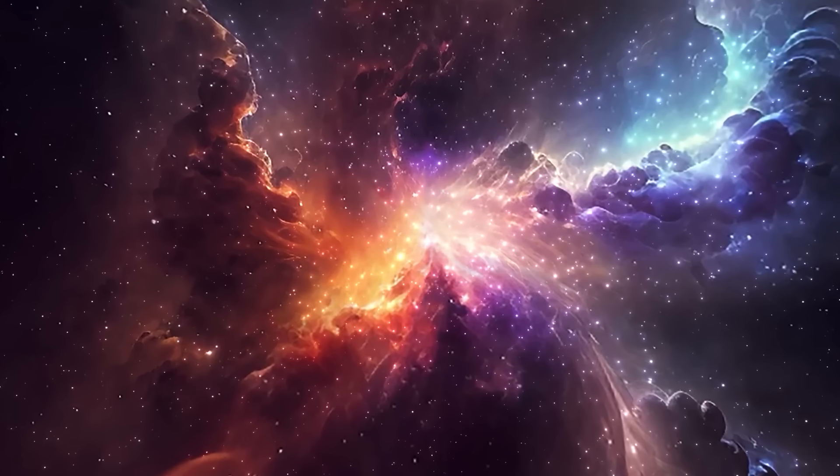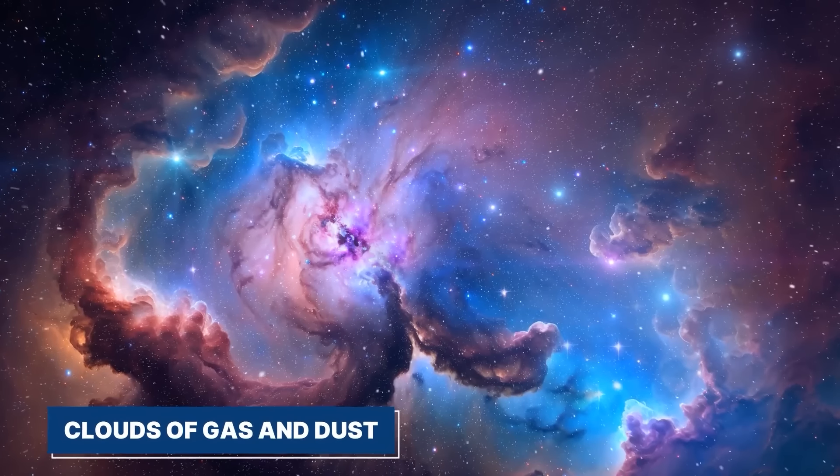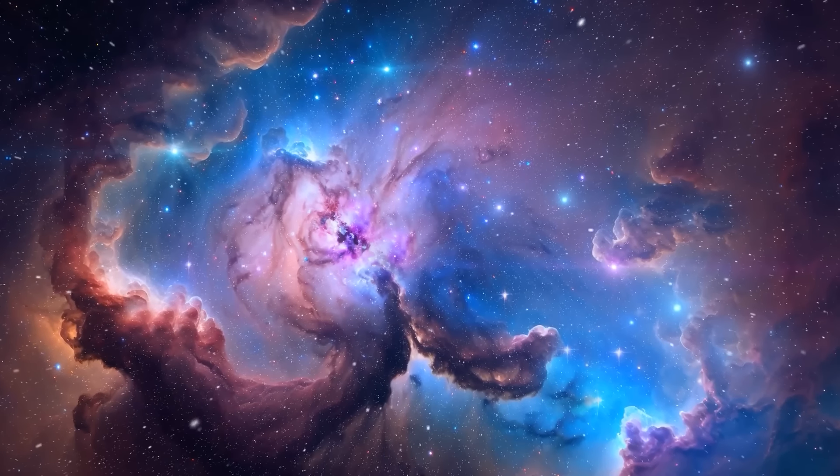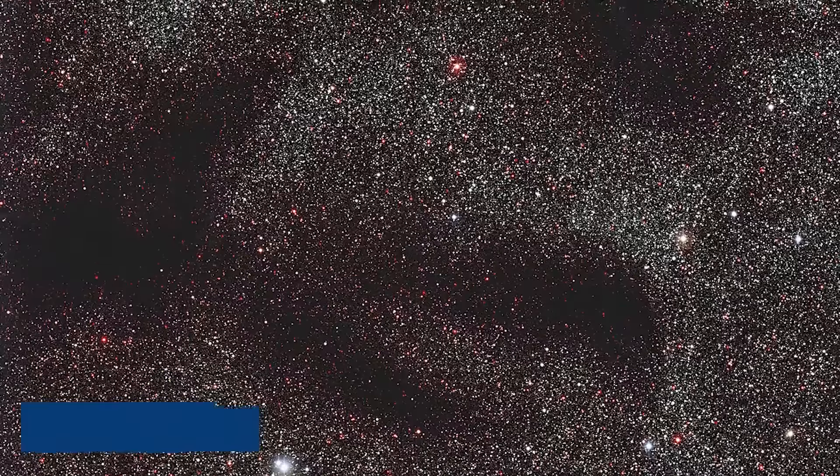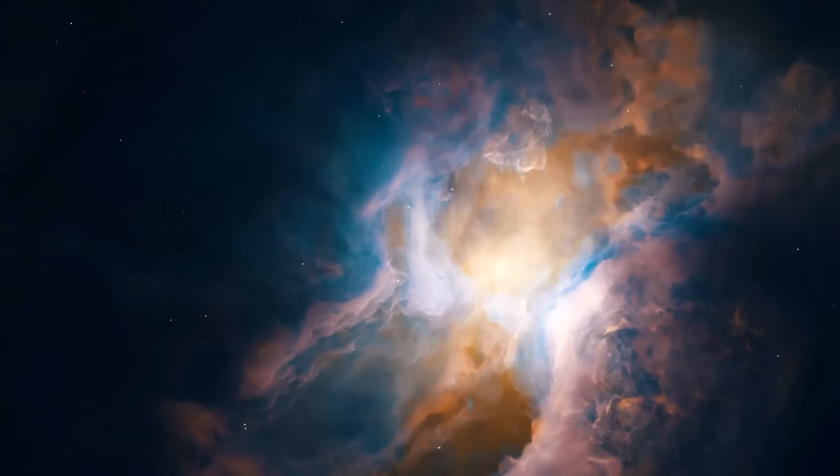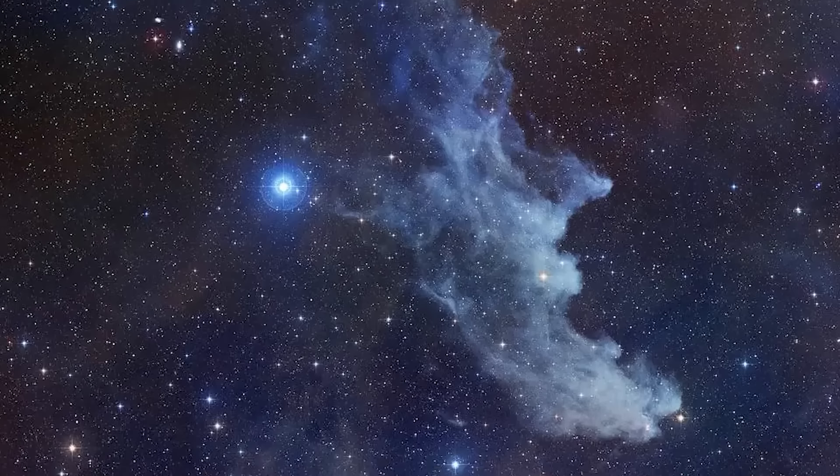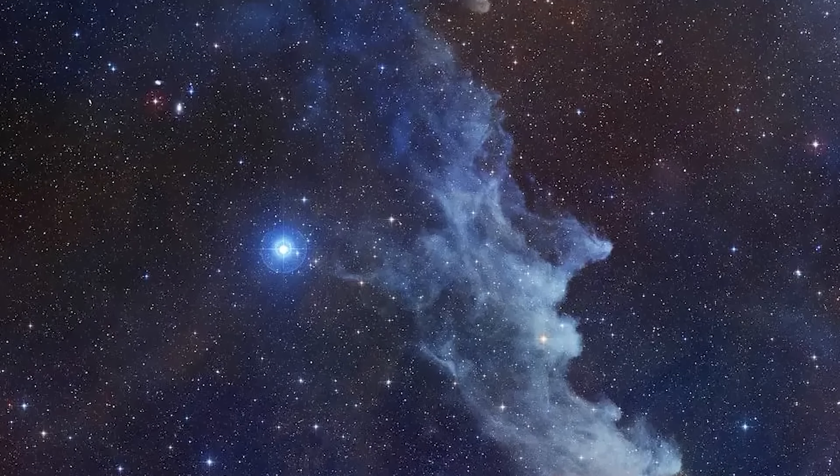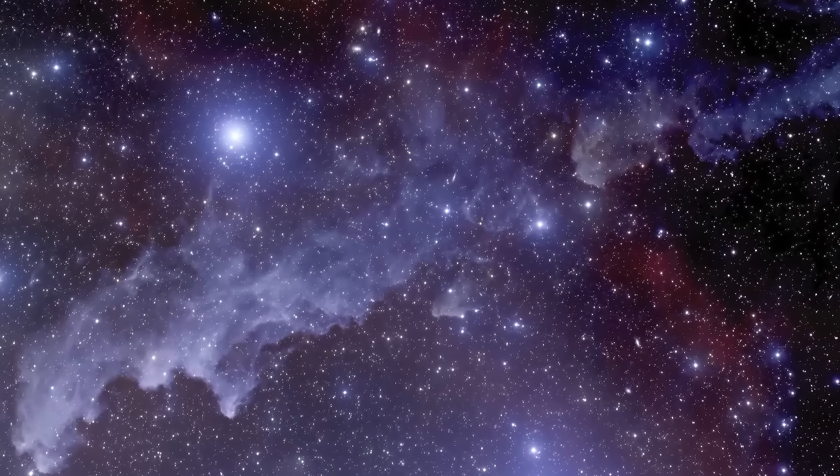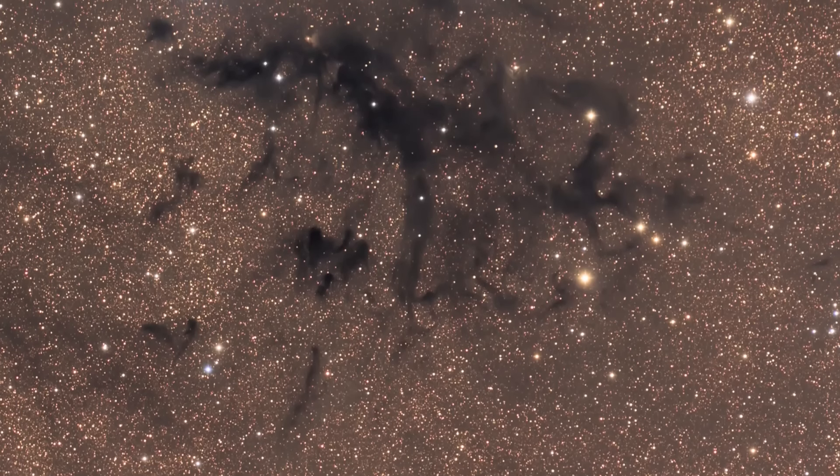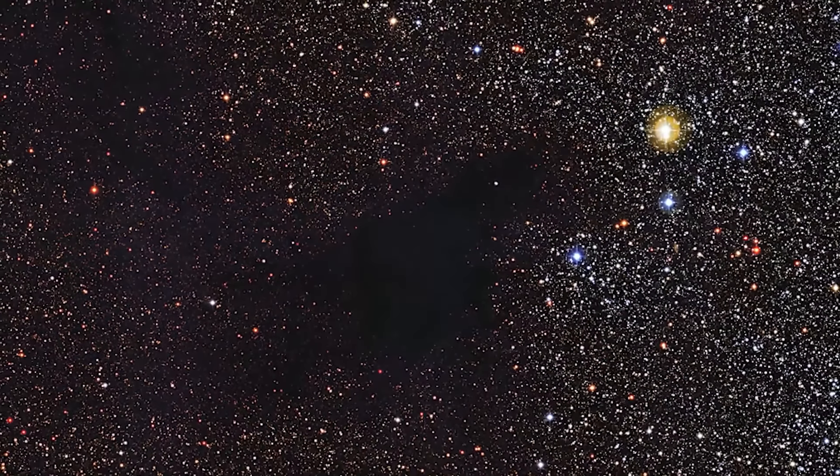One of the most captivating aspects of interstellar space is the presence of nebulae. These clouds of gas and dust can be classified into three main types: emission nebulae, reflection nebulae, and dark nebulae. Emission nebulae, like the Orion nebula, glow due to the energy of nearby stars. Reflection nebulae, such as the Witch Head nebula, reflect the light of nearby stars, creating ethereal clouds. Dark nebulae, on the other hand, obscure the light of stars behind them, casting deep, mysterious shadows.